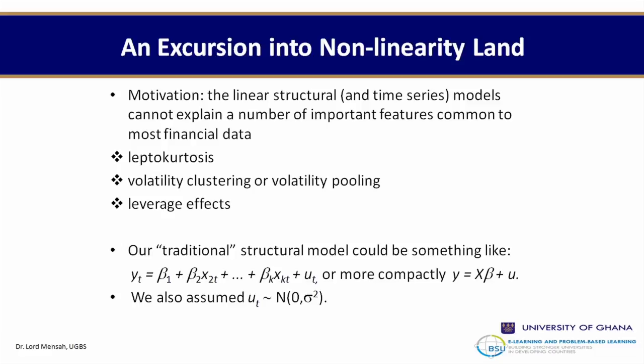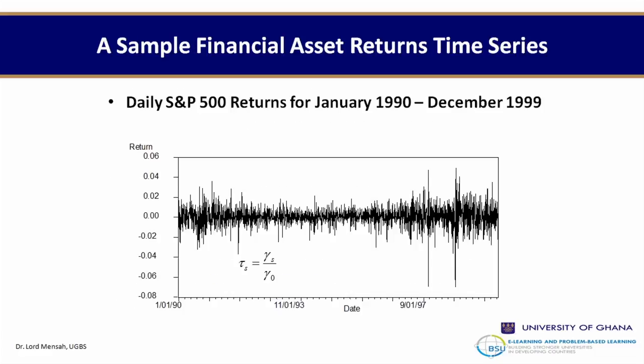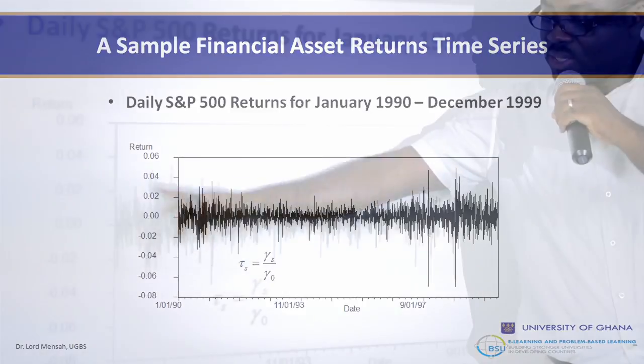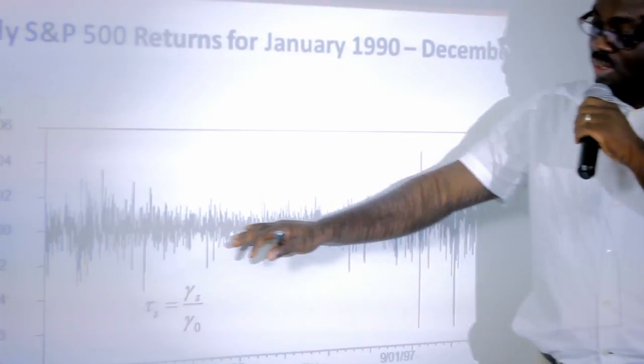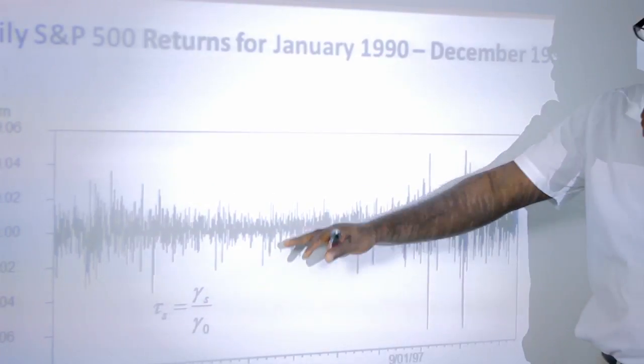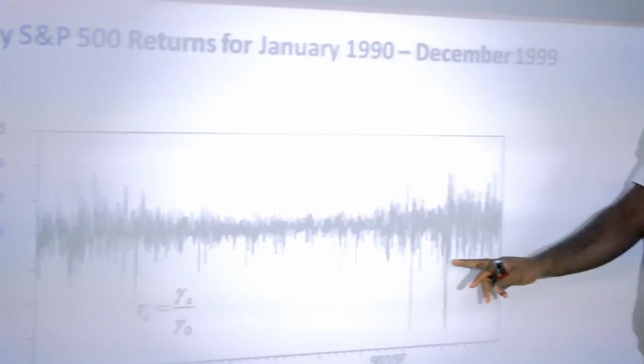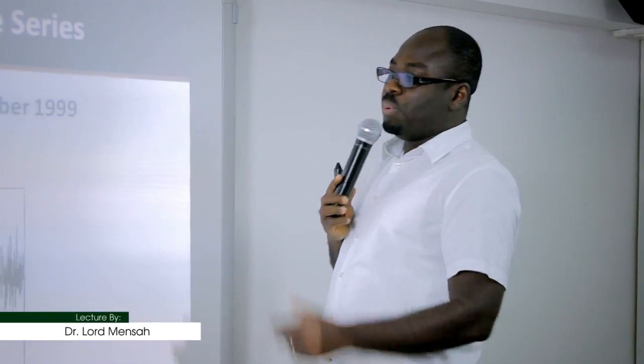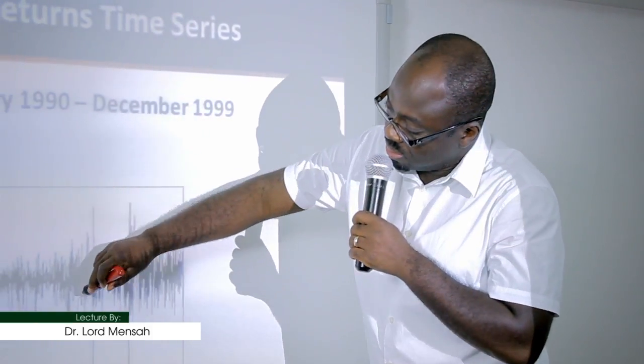This is a typical return series of the S&P 500 from January 1990 to December 1999. Look at the dynamics — when the series indicates higher fluctuations, it follows higher fluctuations. When the series tries to settle into tranquility, the fluctuations reduce. That is a depiction of the volatility clustering movement and how you would capture it.